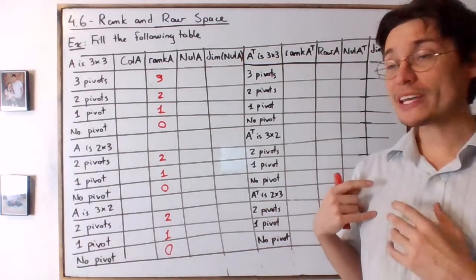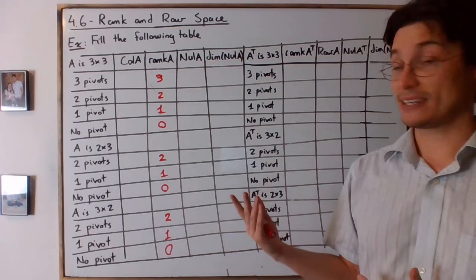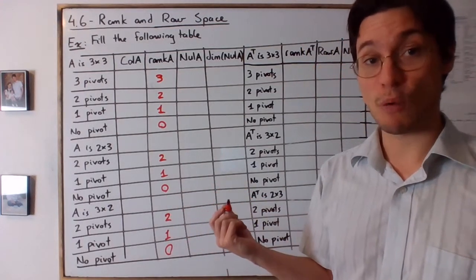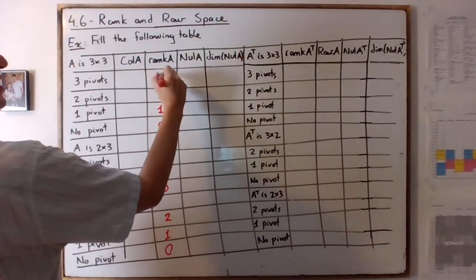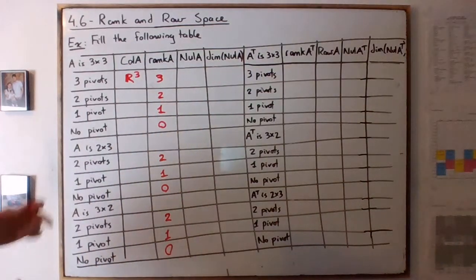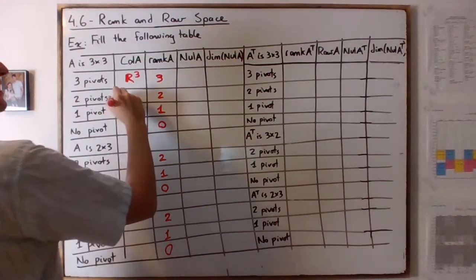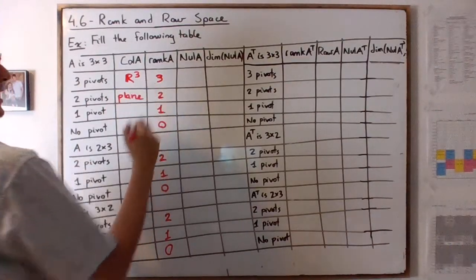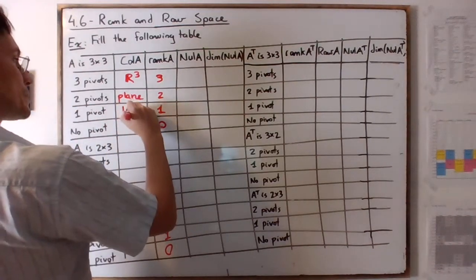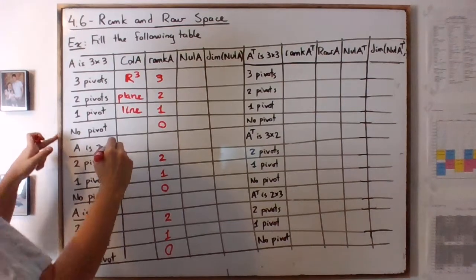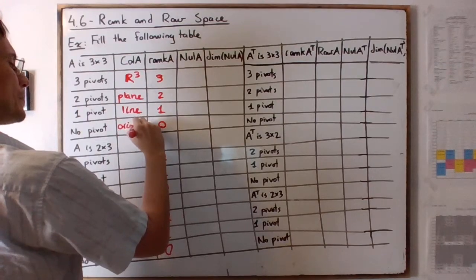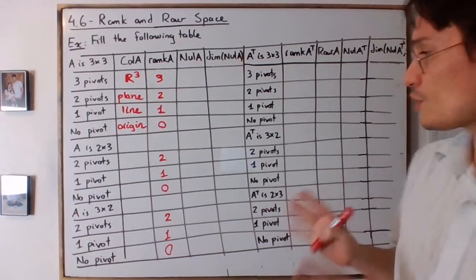Now let's look at what kind of geometric object we have. For a 3x3 matrix it's pretty straightforward: if the rank of A is three, then the column space Col(A) is actually all of R³. Two pivots means it's a plane, one pivot means it's a line, and no pivot is just the origin.